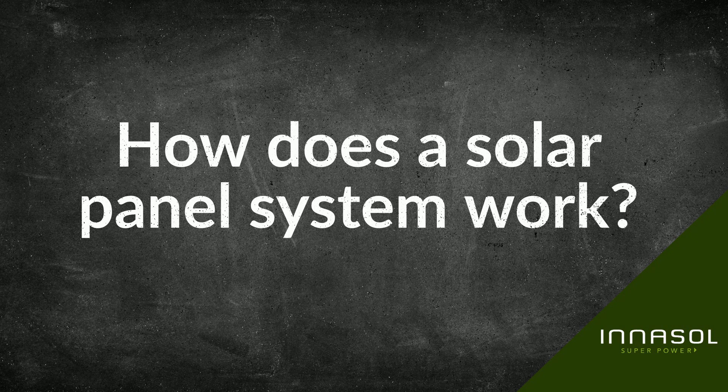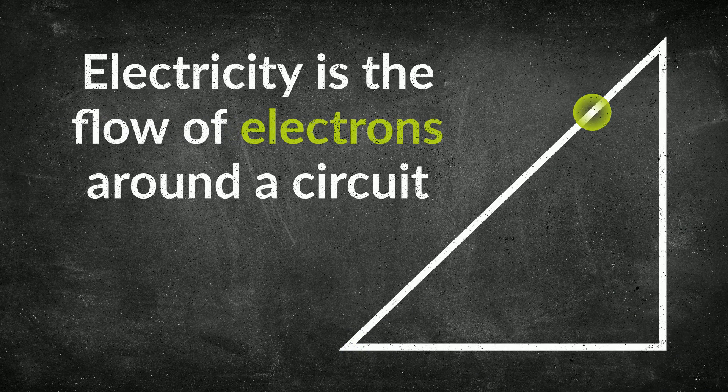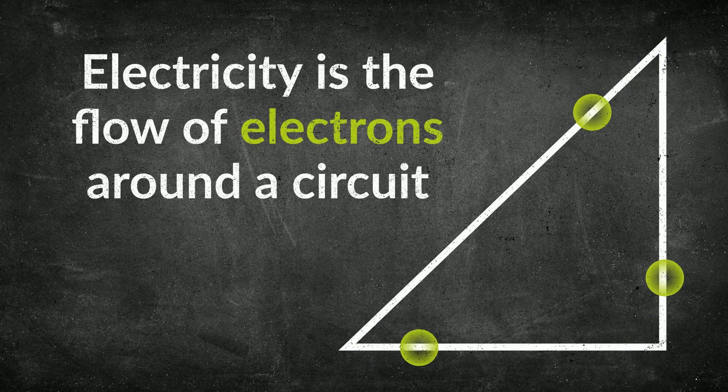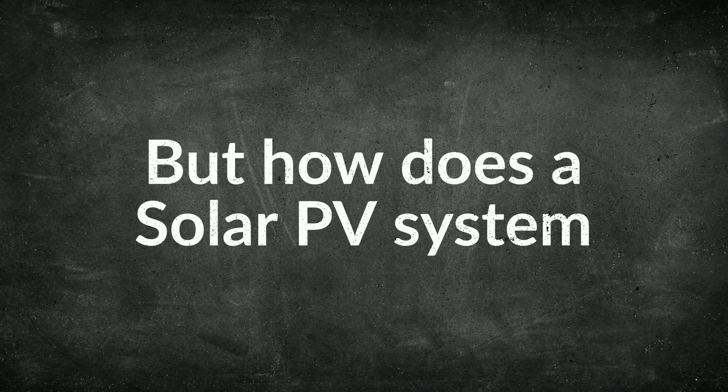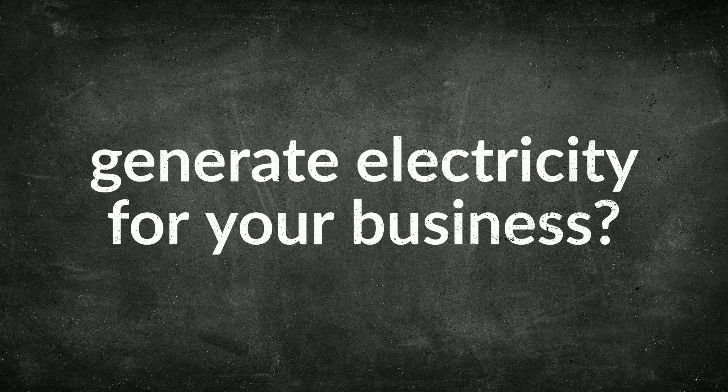How does a solar panel system work? Electricity is the flow of electrons around a circuit. But how does a solar PV system generate electricity for your business?